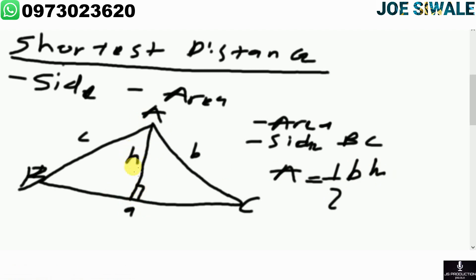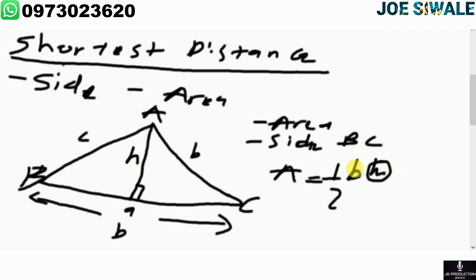We are supposed to calculate this length. When calculating the shortest distance, we use BC as b. So we can calculate h — the shortest distance — if we know the length BC and if we have been given the area. That's how you calculate your shortest distance. Let us look at an example.